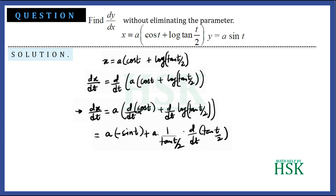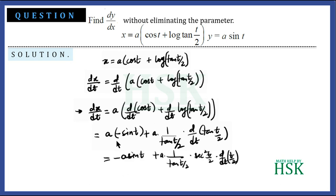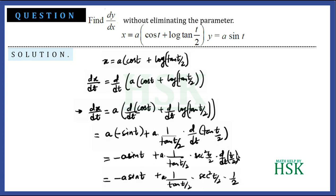Opening the bracket, we get minus a sin t. Then d/dt of tan(t/2) equals sec²(t/2) times d/dt of (t/2), and d/dt of (t/2) equals 1/2.